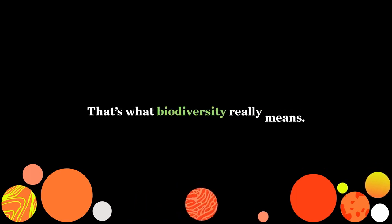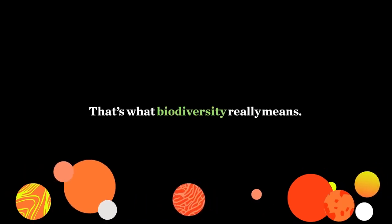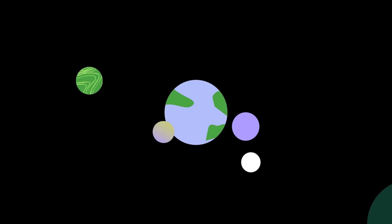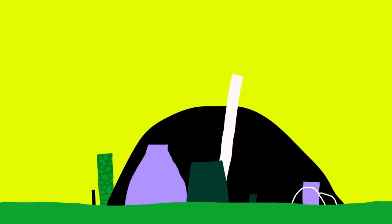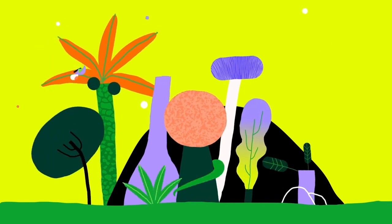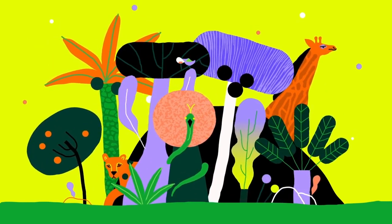That's what biodiversity really means. But it's not too late. We can slow the extinctions and save the planet if we protect our wild ecosystems and change our habits to help restore the lands we've already degraded.